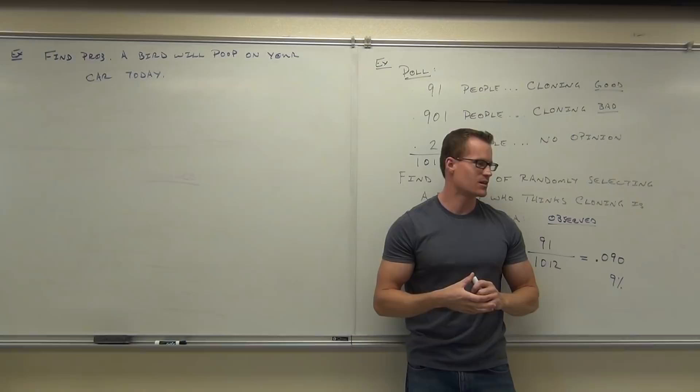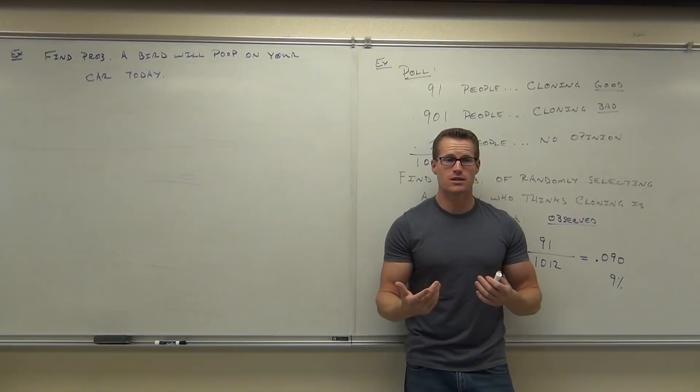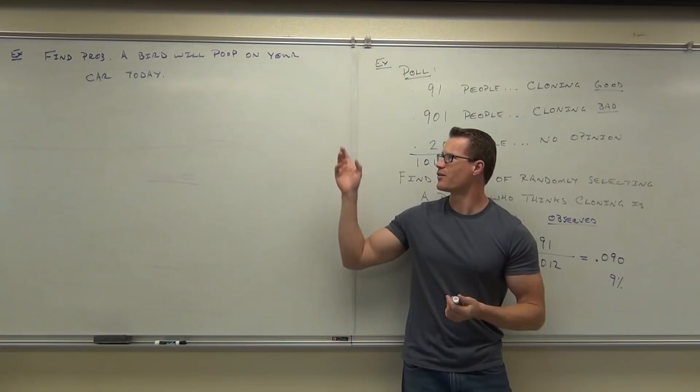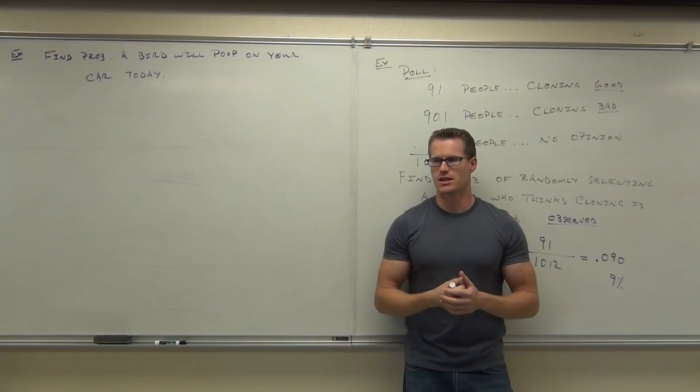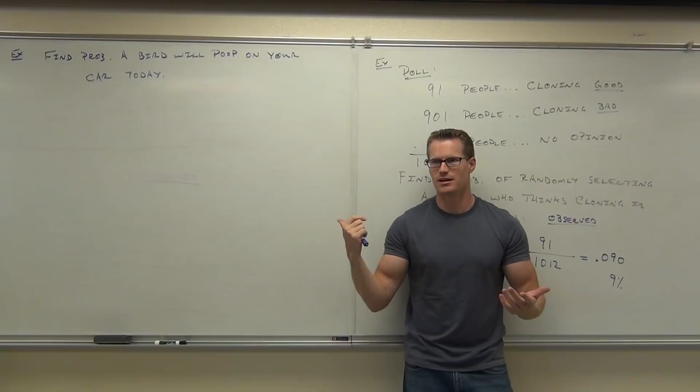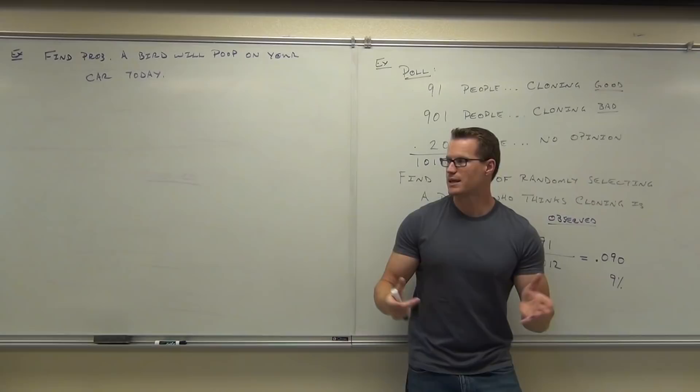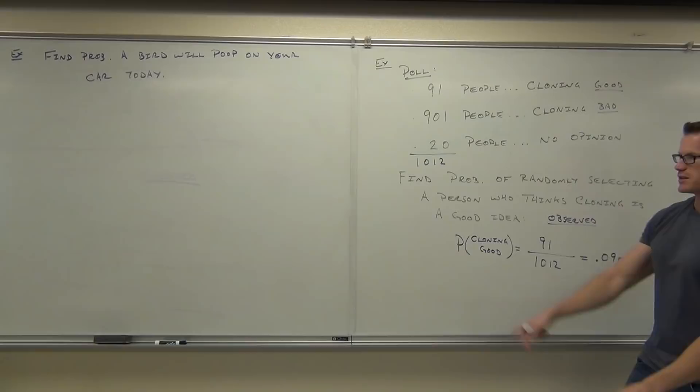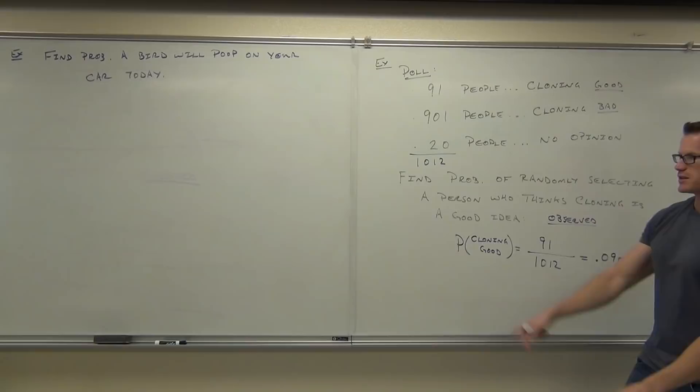For me, the probability would be like 50% — my car honestly gets pooped on all the time. Maybe for you it's 20% or 5%. That's another thing about subjective probability: it can change person to person. Can classical and observed change? No — those are based on hard evidence or complete theory. Subjective probabilities can change because they're based on individual educated guesses. So the probability of a bird pooping on your car is certainly subjective — and it probably depends on where you park.